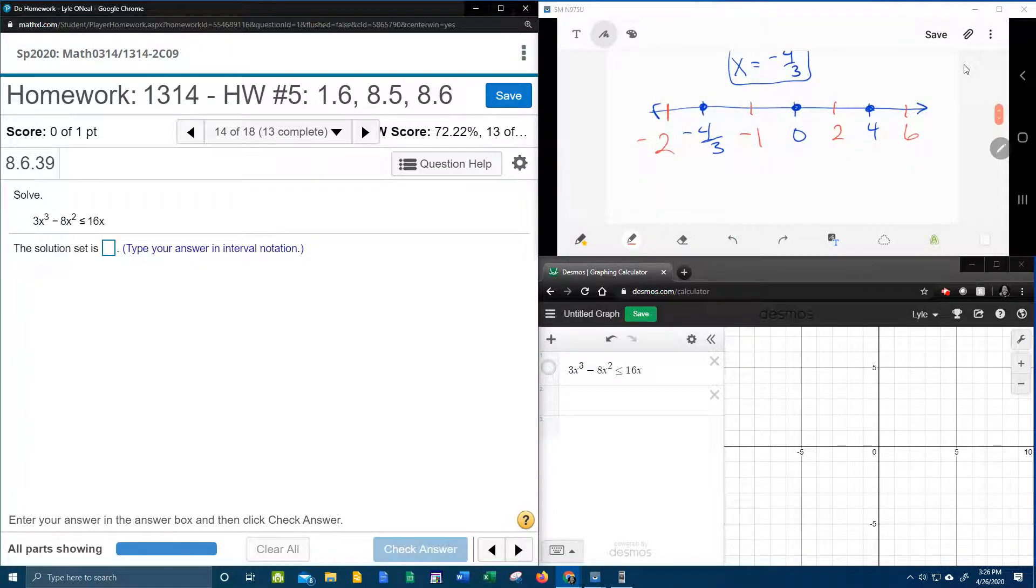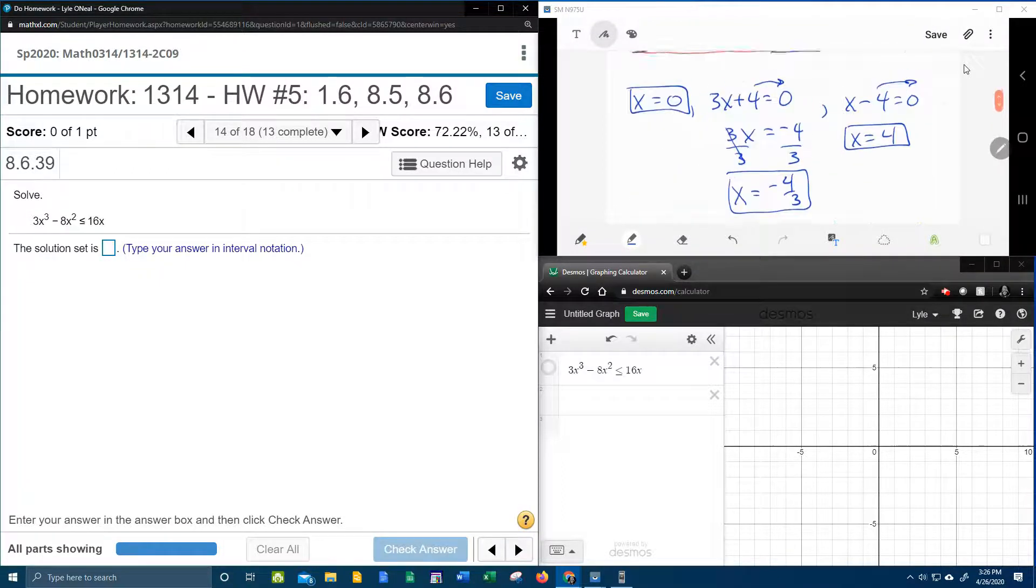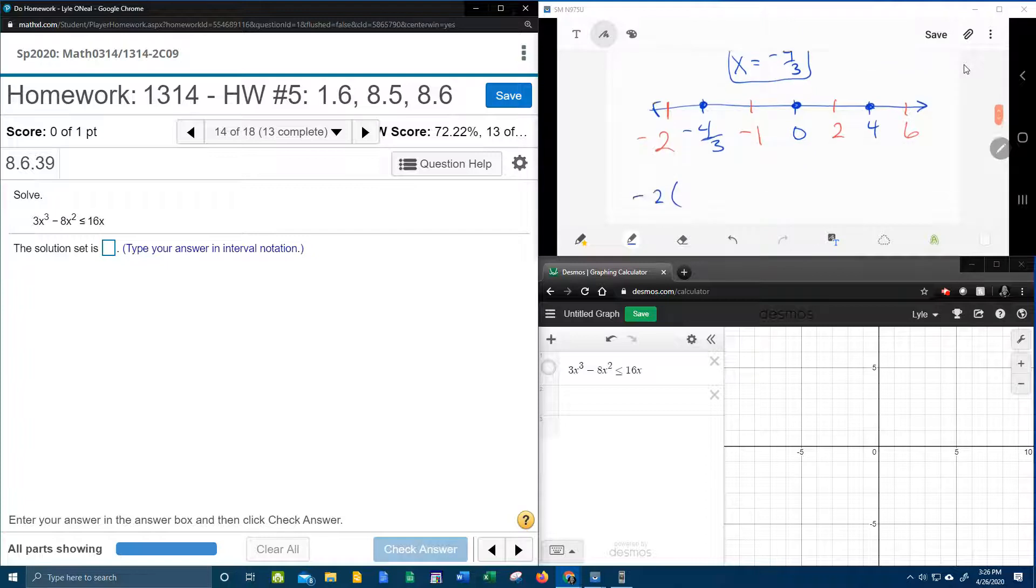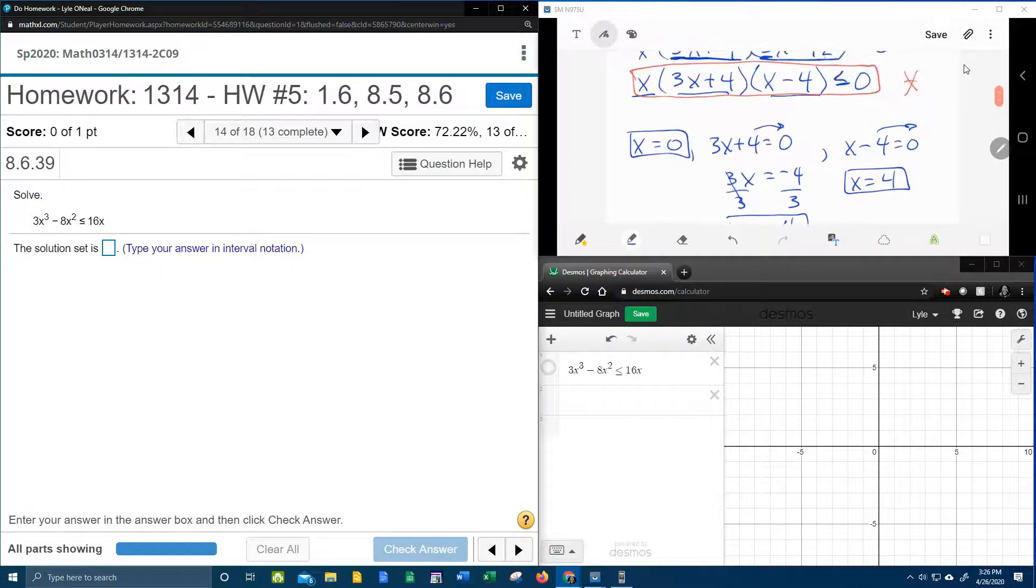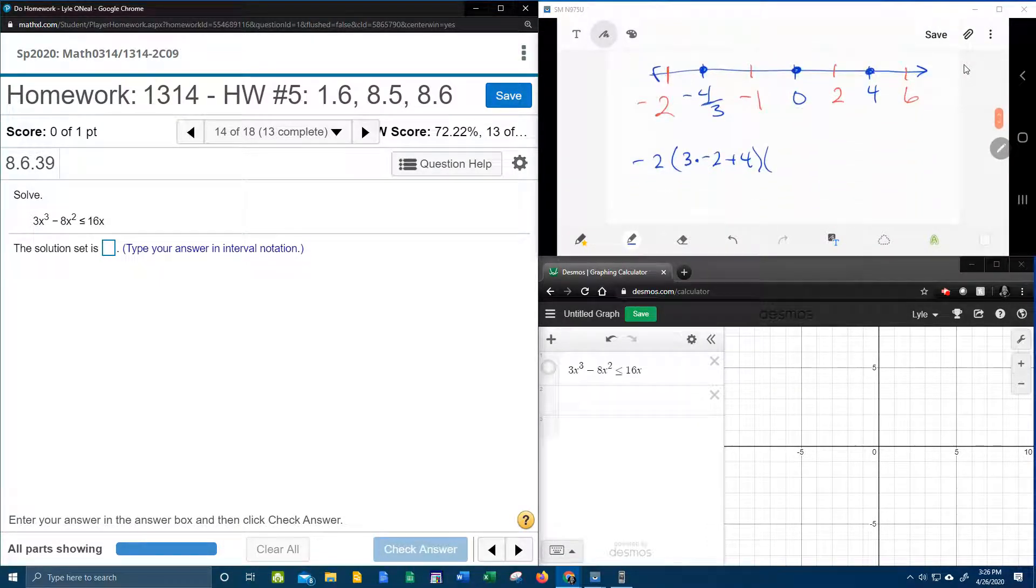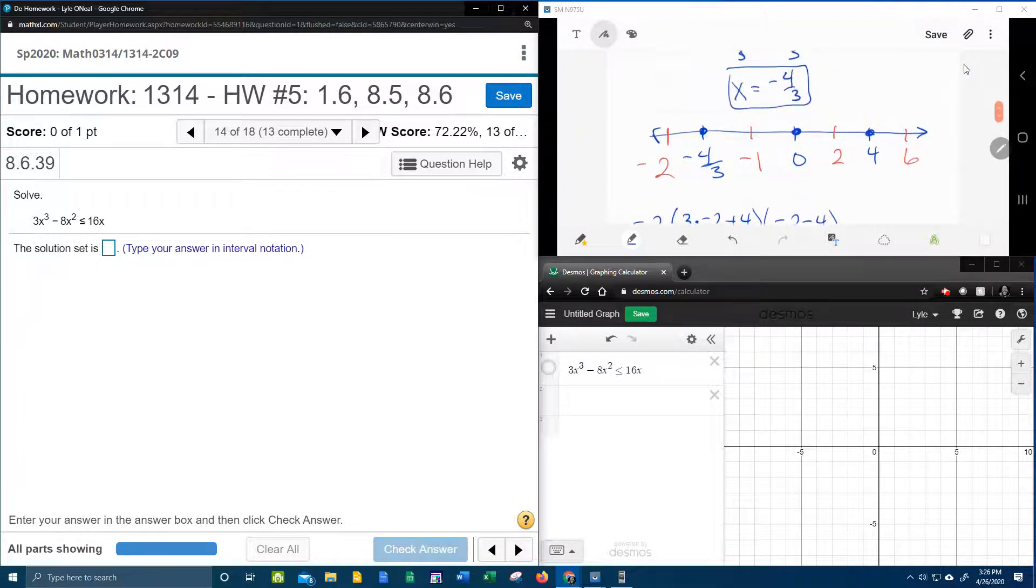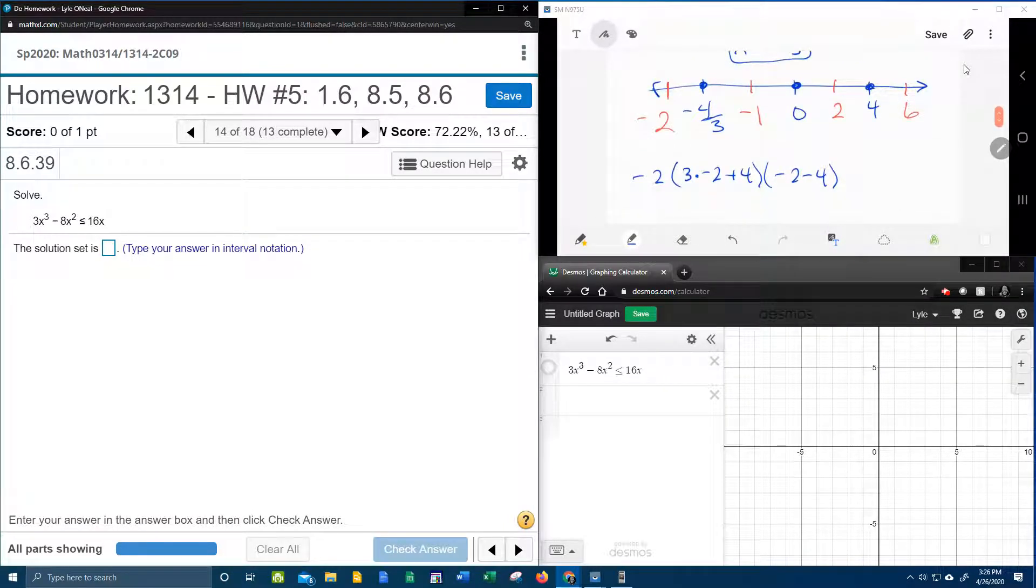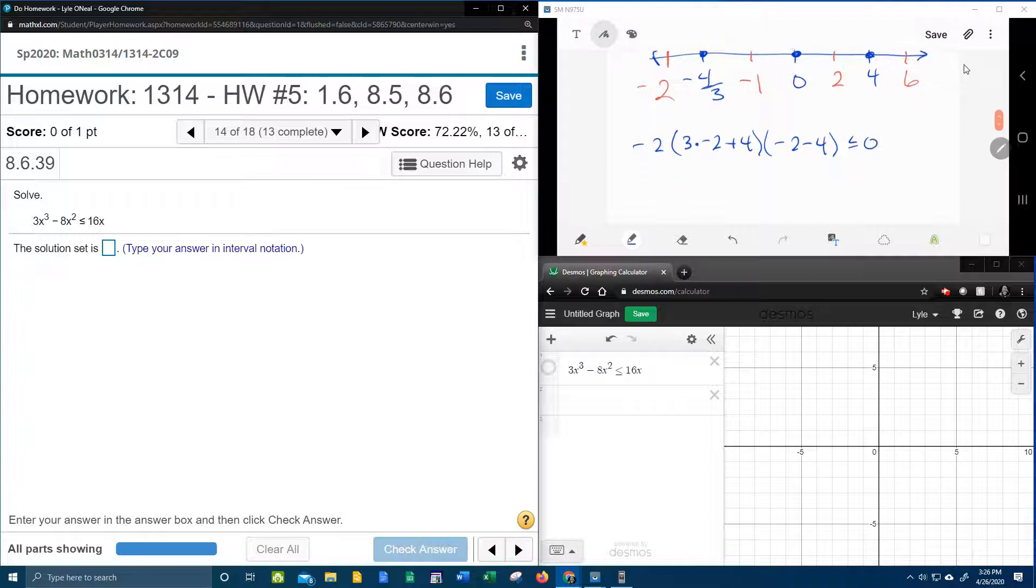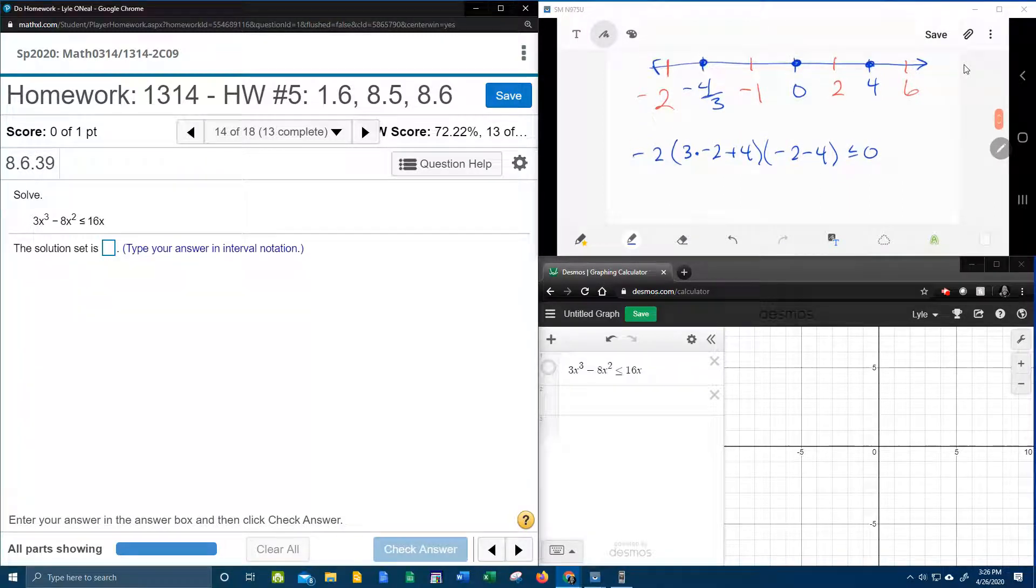So plugging in for x. I want to use blue. Negative 2. 3 times negative 2 plus 4. And negative 2 minus 4. We want to know is that less than or equal to 0.